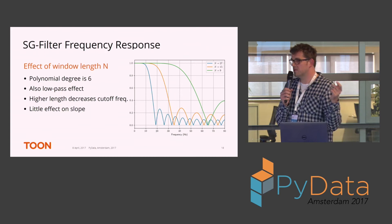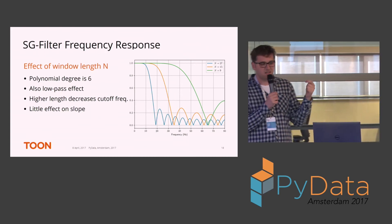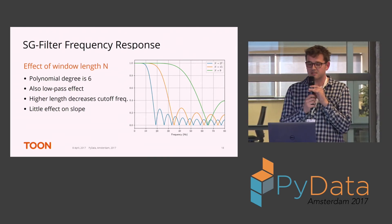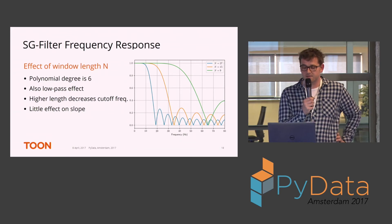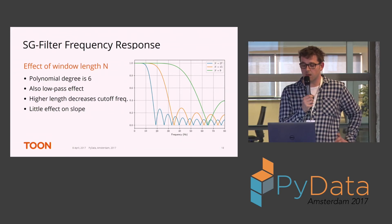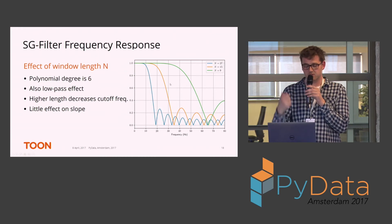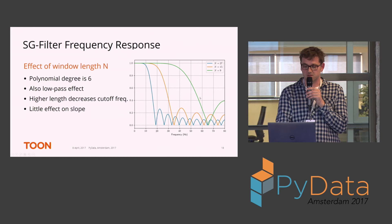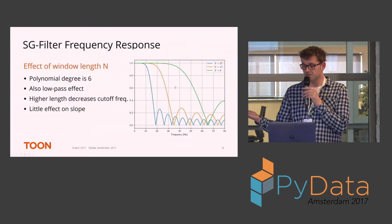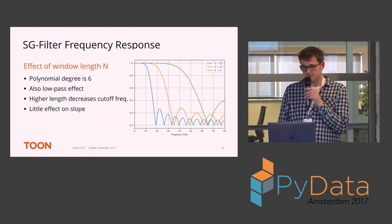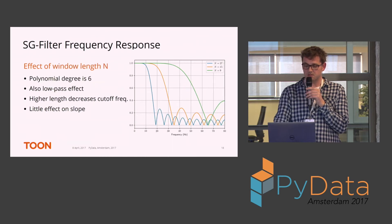The second parameter besides the degree is the window length N. If you increase the length of the window you will decrease the cut-off frequency — again a low-pass filter with a varying cut-off frequency depending on window length. But what's interesting is that changing the window length also affects the slope: increasing the window length gives a less steep slope. So changing the polynomial degree and changing the window length are not the same — they have different effects on the filter shape.